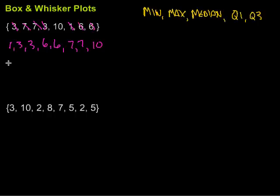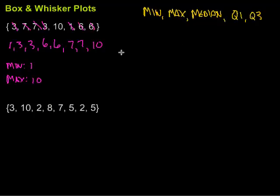Let's start with the minimum and maximum because those are pretty straightforward. The minimum is the smallest in the set — in this case, it's just one. The maximum is the largest in the set — in this case, it's ten.